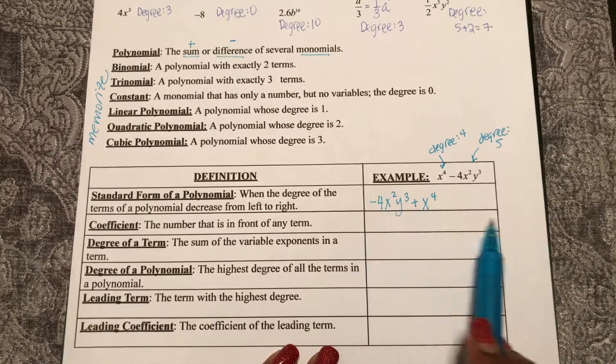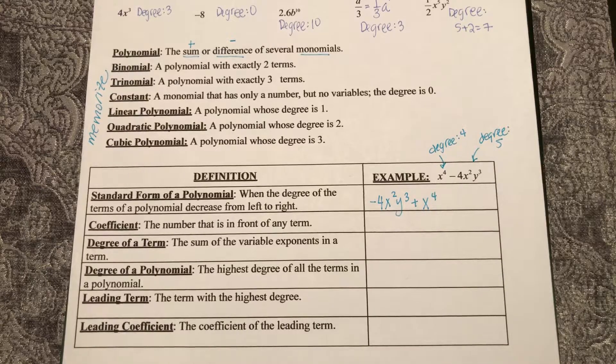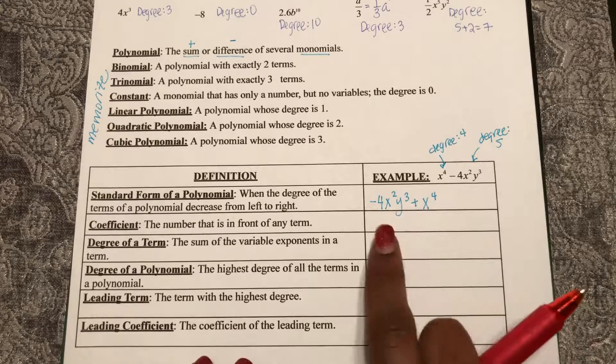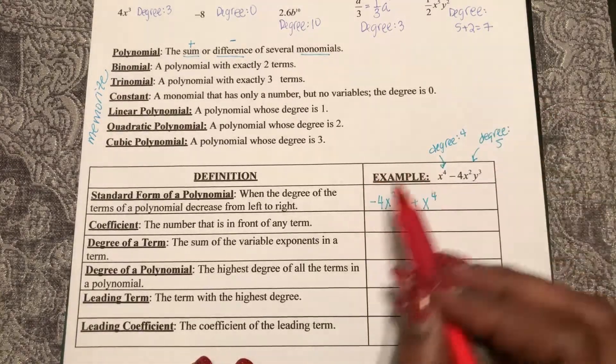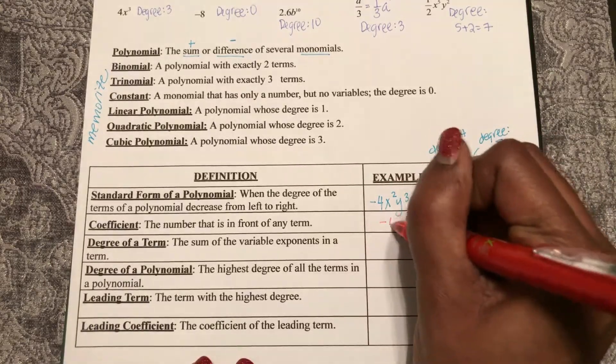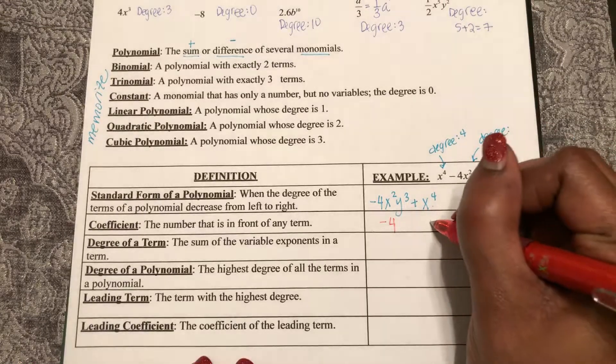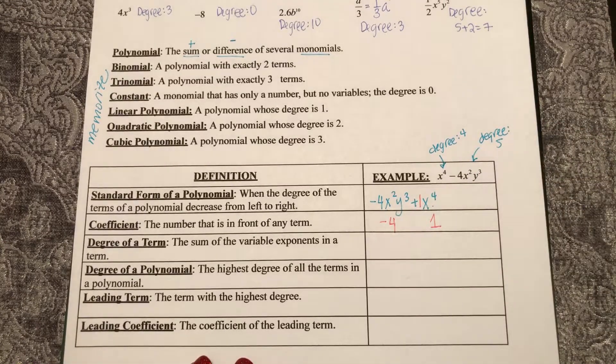So my coefficients are the numbers in front of each term. For this term, my coefficient is negative four. For this term, my coefficient is one, because we look at that as one x to the fourth.